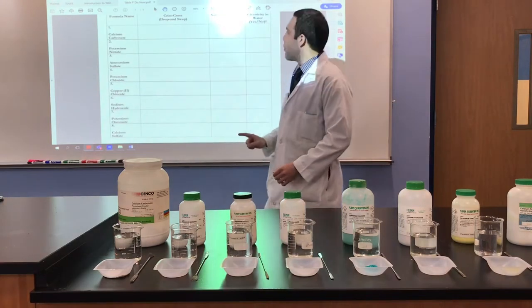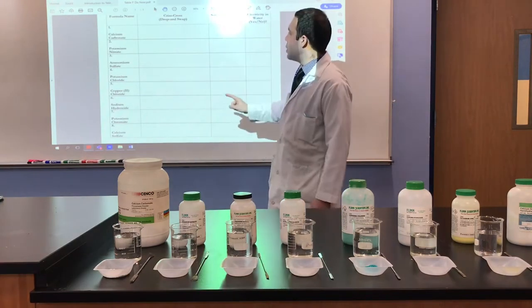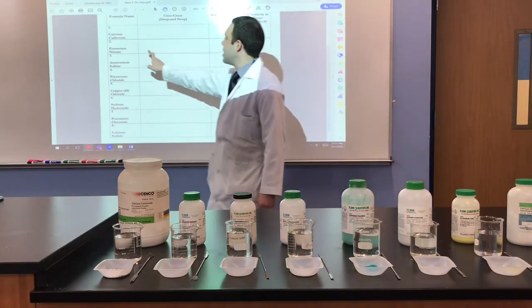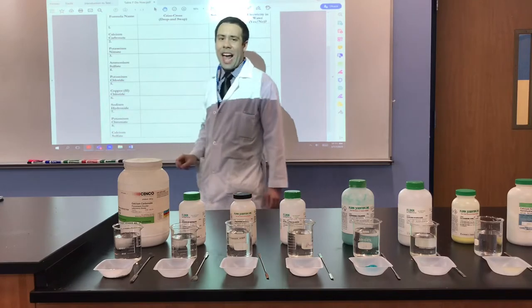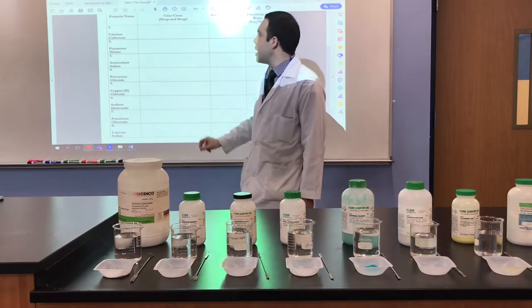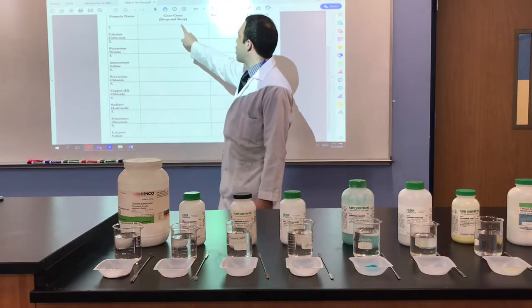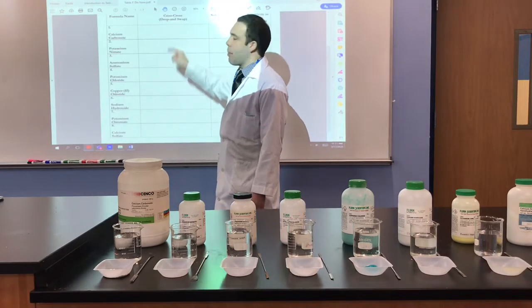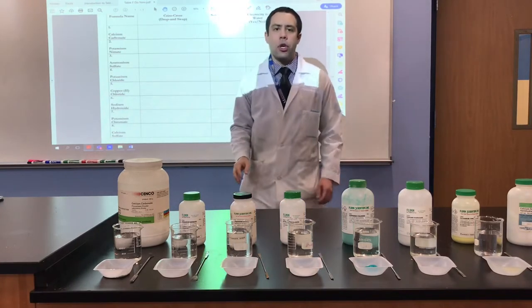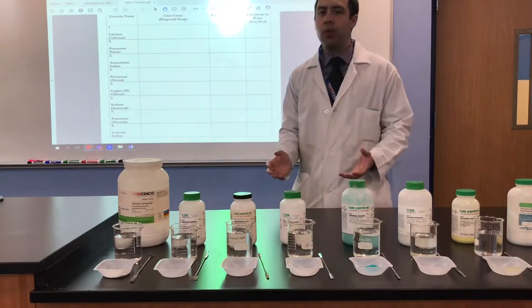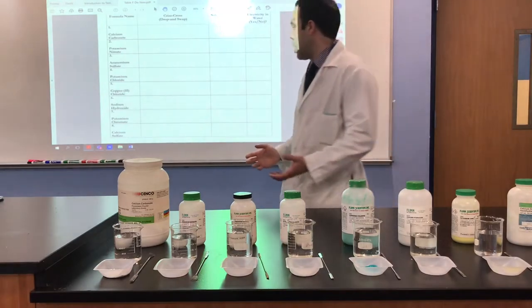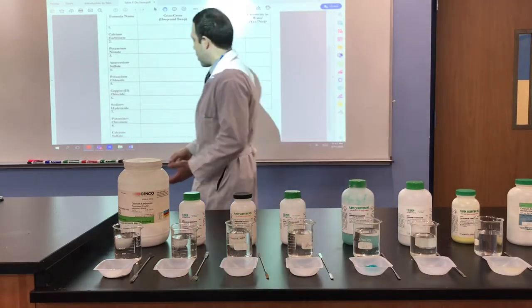The very first thing you are going to do is take these formula names, like calcium carbonate, and turn them into chemical formulas using the criss-cross or drop-and-swap method. We'll do the first one together.